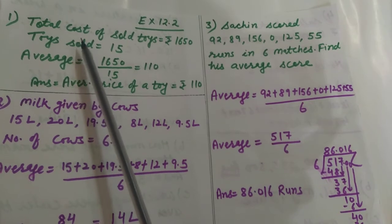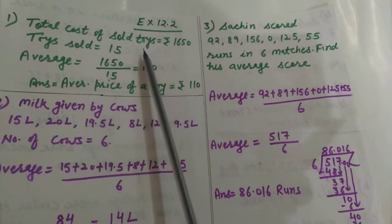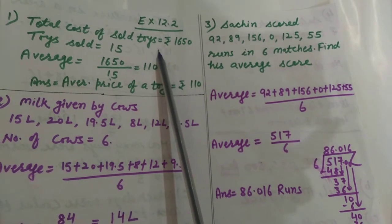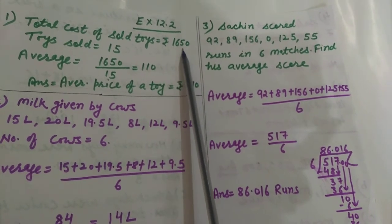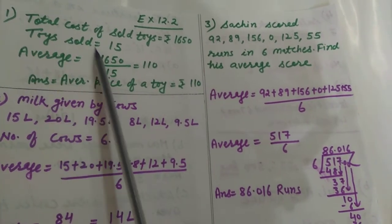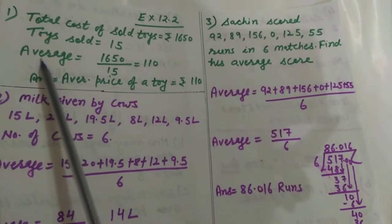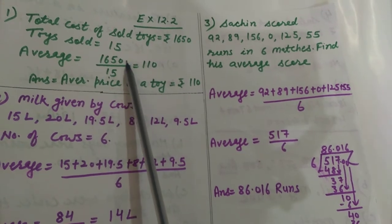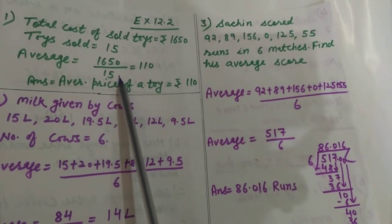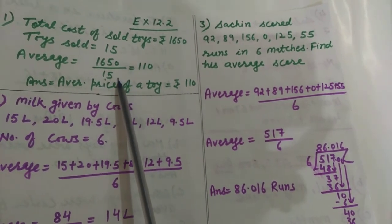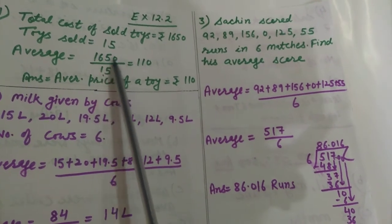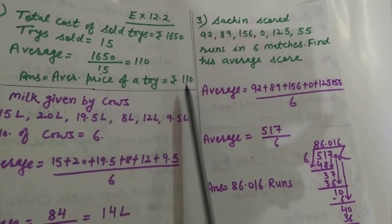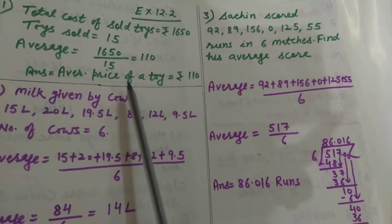Question number 1. Total cost of sold toys. Sold toys ki cost de rakhi hai, total, that is rupees 1650. Total toys sold kitne hai? 15. So you have to find average. That is total cost upon total toys. Means total cost upon number of toys sold. 1650 upon 15. Cut karenge. Answer will be rupees 110 is the average price.